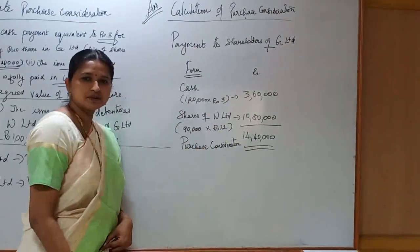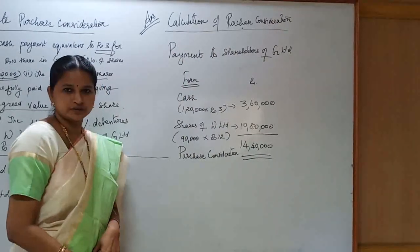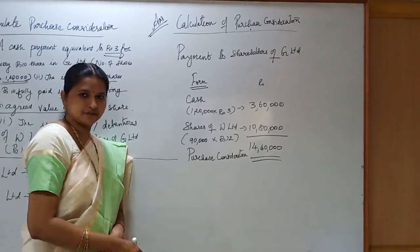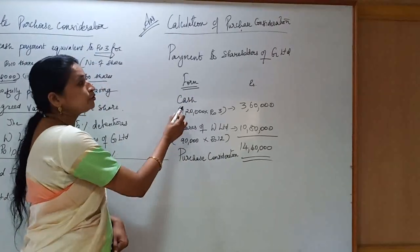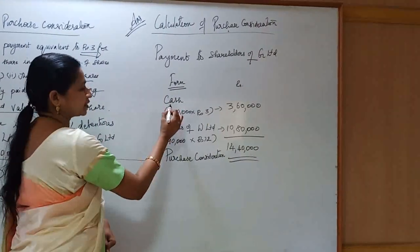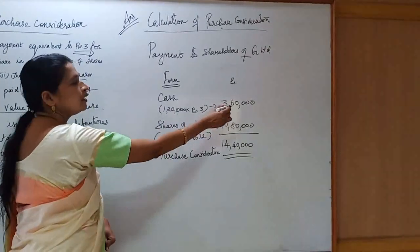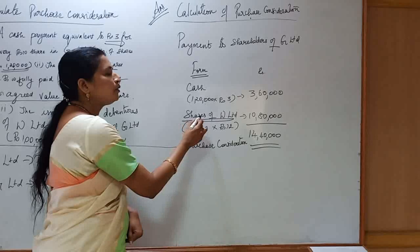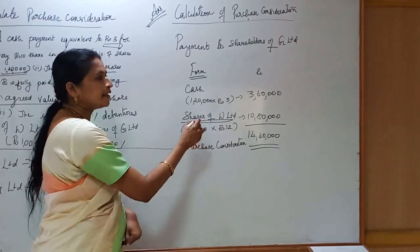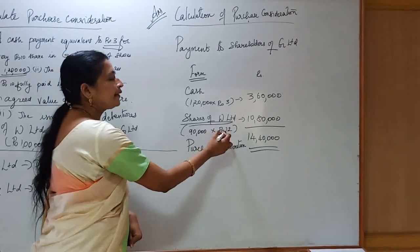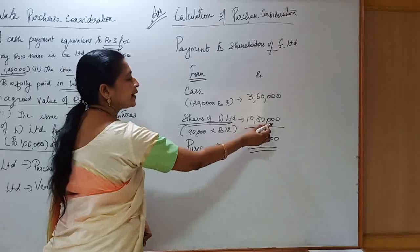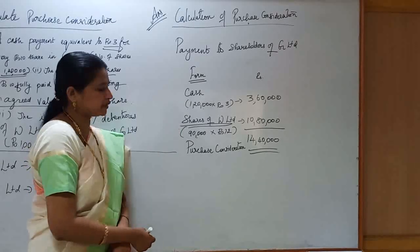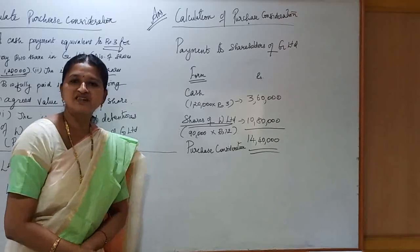Calculation of purchase consideration: any payment made to shareholders of vendor company is the purchase consideration. Payment made to shareholders of G Limited in the form of cash: 1,20,000 shares × rupees 3 = rupees 3,60,000. Payment made to shareholders of G Limited in the form of shares of W Limited: 90,000 shares issued by W Limited at an agreed value of rupees 12, so 90,000 × rupees 12 = rupees 10,80,000. Total payment made to shareholders of G Limited = rupees 14,40,000, which is the purchase consideration.